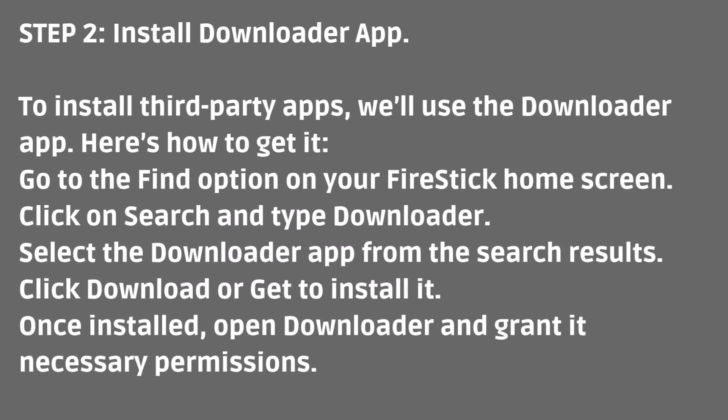Step 2: Install the Downloader app. To install third-party apps, we'll use the Downloader app. Here's how to get it. Go to the Find option on your Fire Stick home screen, click on Search, and type Downloader. Select the Downloader app from the search results and click Download or Get to install it. Once installed, open Downloader and grant it the necessary permissions.